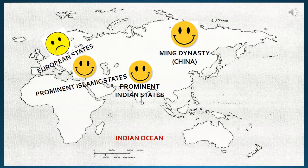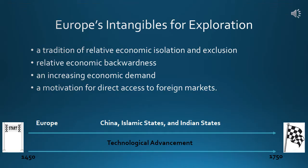Europe was behind in printing, ocean-going vessels, navigational instruments, and lacked a physical presence in the busiest ocean to that time, the Indian Ocean. Seemingly disadvantaged, Europe was not atop the list for most likely to explore, colonize, and conquer the world over the next several centuries. So, how did that happen? What things enabled Europe to be the early modern region of the world that would globalize its culture, explore the oceans, colonize distant lands, and discover direct access points to Asian and African markets?